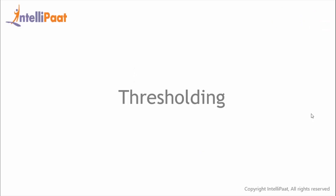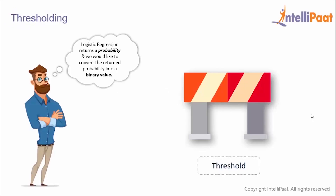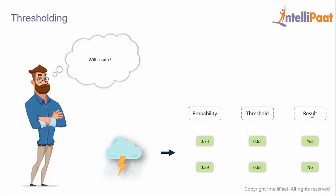Now we'll understand why we need thresholding. When we build a logistic regression model it returns a probability, not a direct result. So in order to map a logistic regression value to a binary category, you must define a classification threshold. Any value above the threshold is taken to be true, and a value below the threshold is taken to be false.